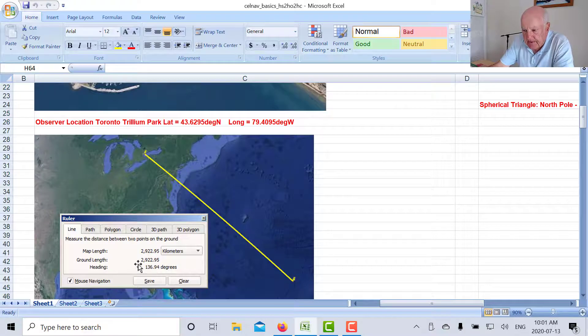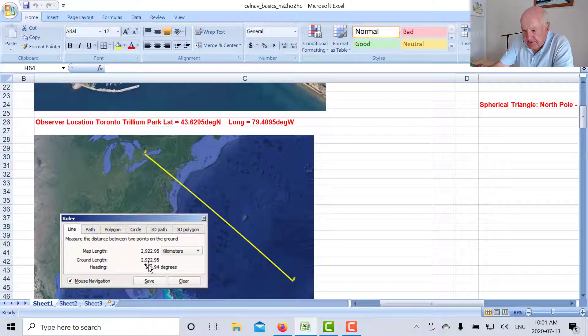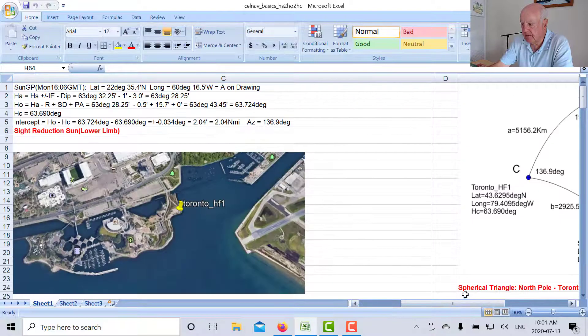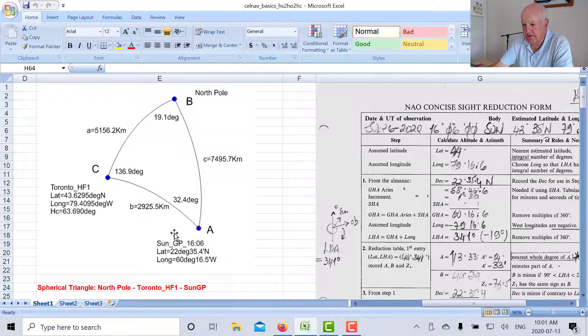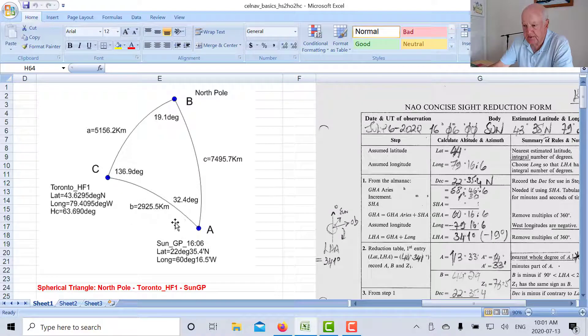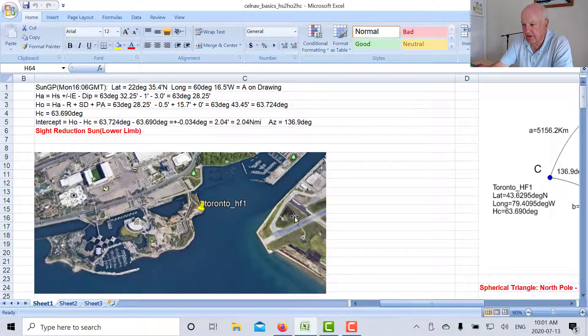So over here what I'm doing is I'm using Google Earth and I'm putting in the known location and the Sun GP and seeing what my distance is. It's 2922.95 or 2923 kilometers, 136.9 degrees. So that's the same azimuth. If you go over to the spherical triangle you'll see that it's 2925 so that's very close. So Google Earth agrees with our result.